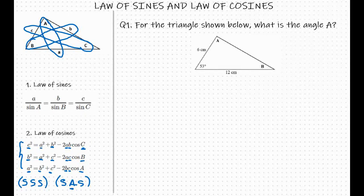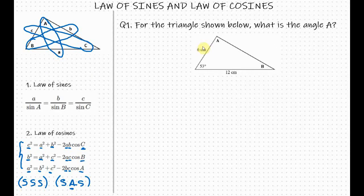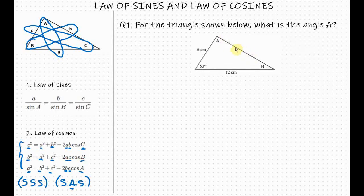Now let's go with the example that I have here, which includes both laws. For the triangle shown below, what is the angle A? This is how I will approach this problem. First, using the law of cosines, I will find the side length here. And then using the law of sines, I will find the angle A.